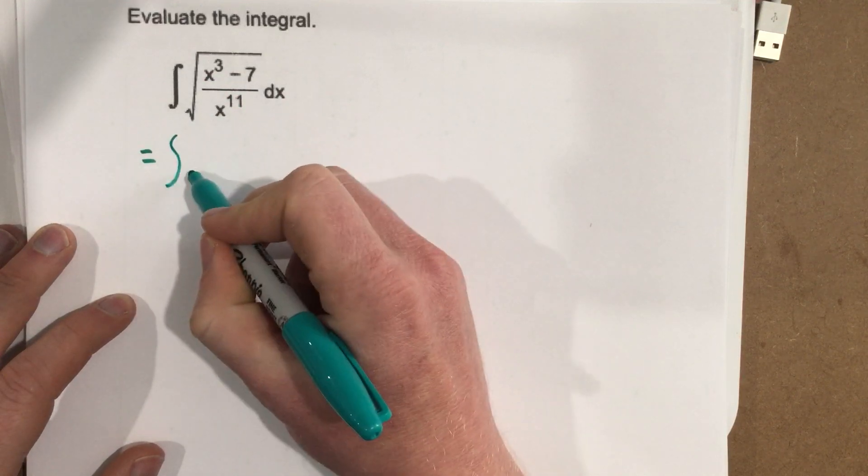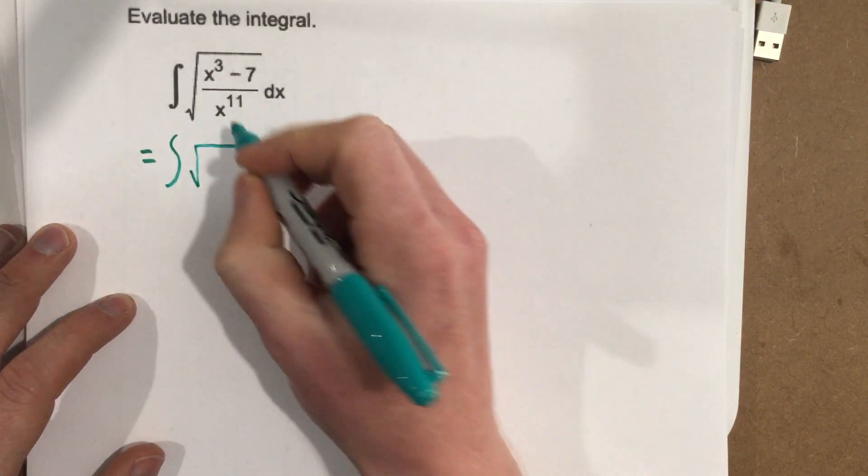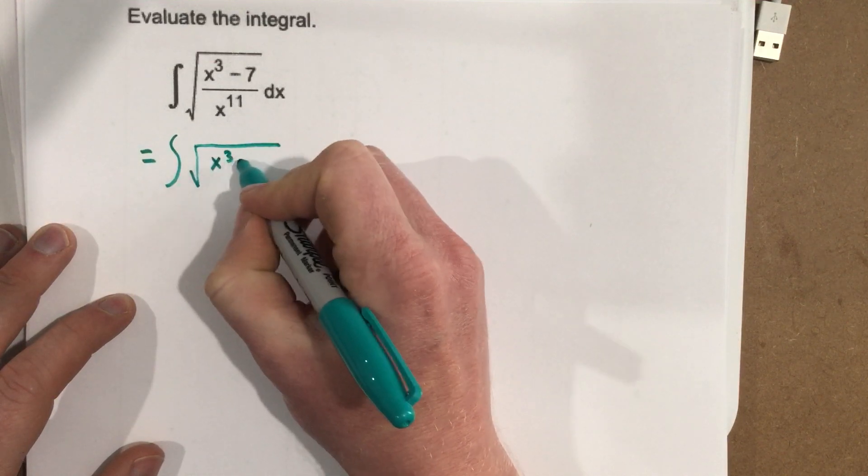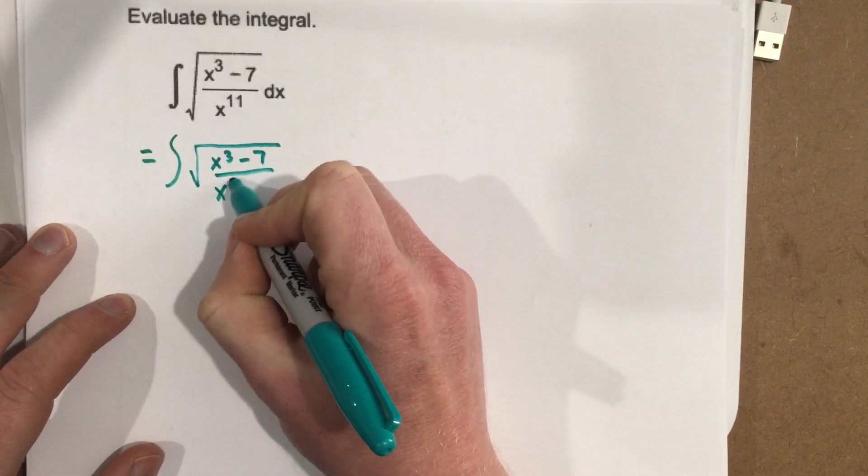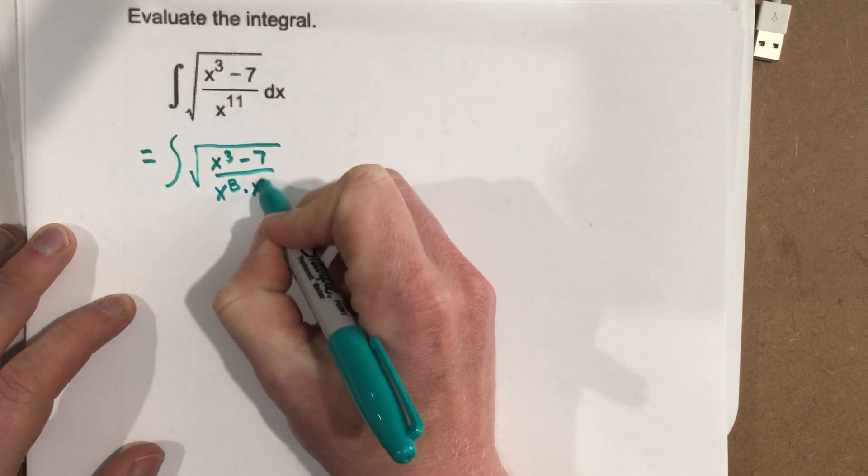So I can rewrite this as root x to the third minus 7 over x to the eighth times x cubed.